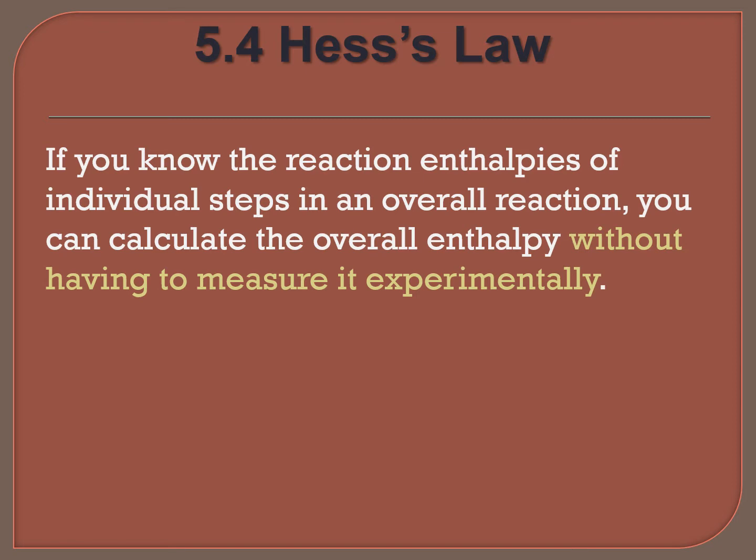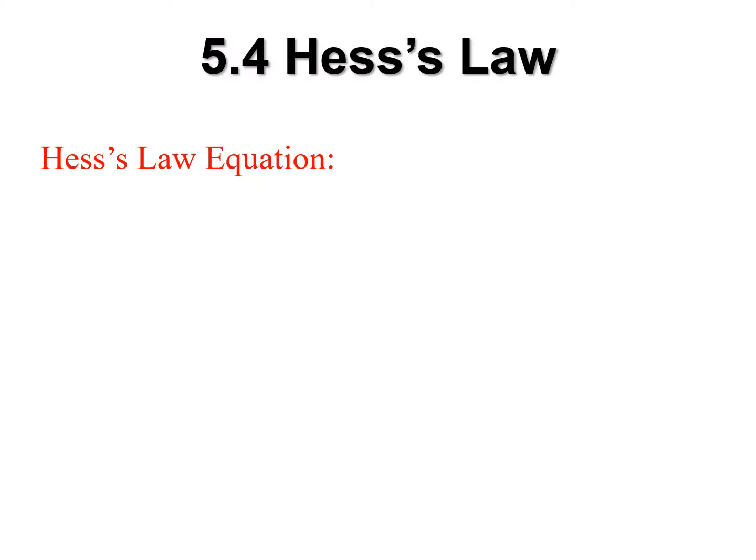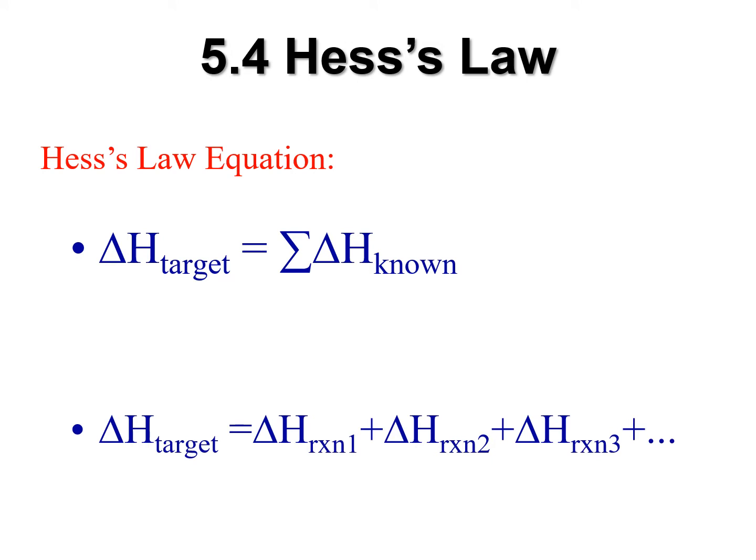So if you know the reaction enthalpies of the individual steps in an overall reaction, you can calculate the overall enthalpies without having to measure it experimentally. No calculations, just manipulation of values. So for Hess's law, essentially what we're going to do is our delta H target is going to be equal to the individual sums of these steps.